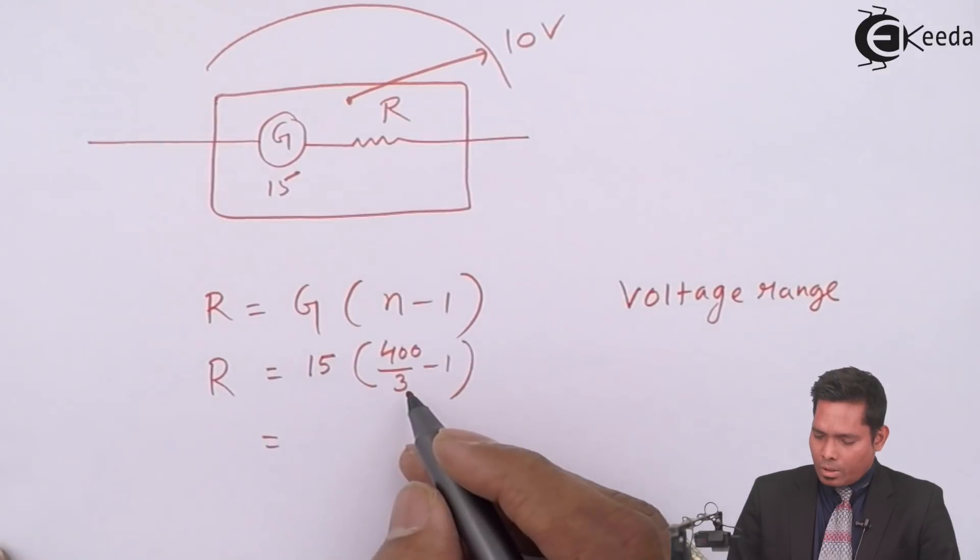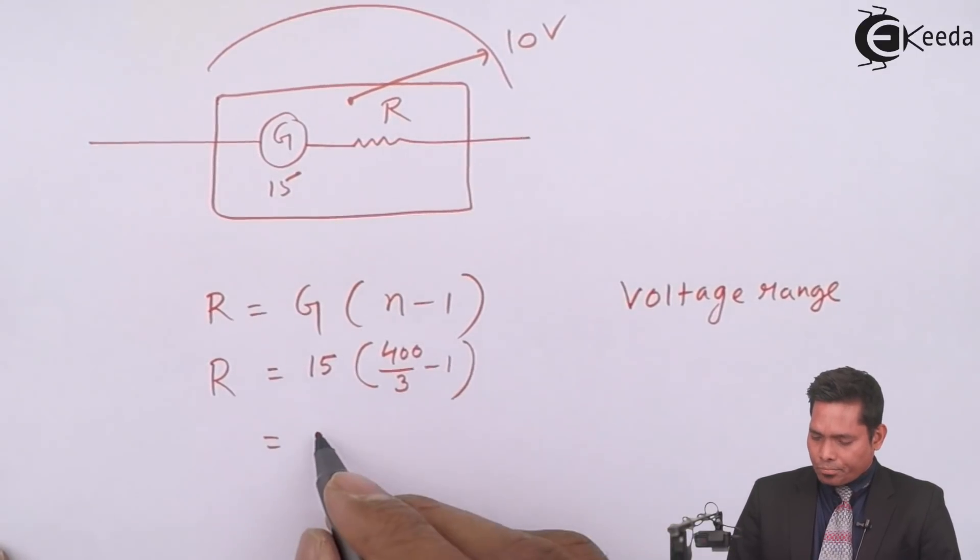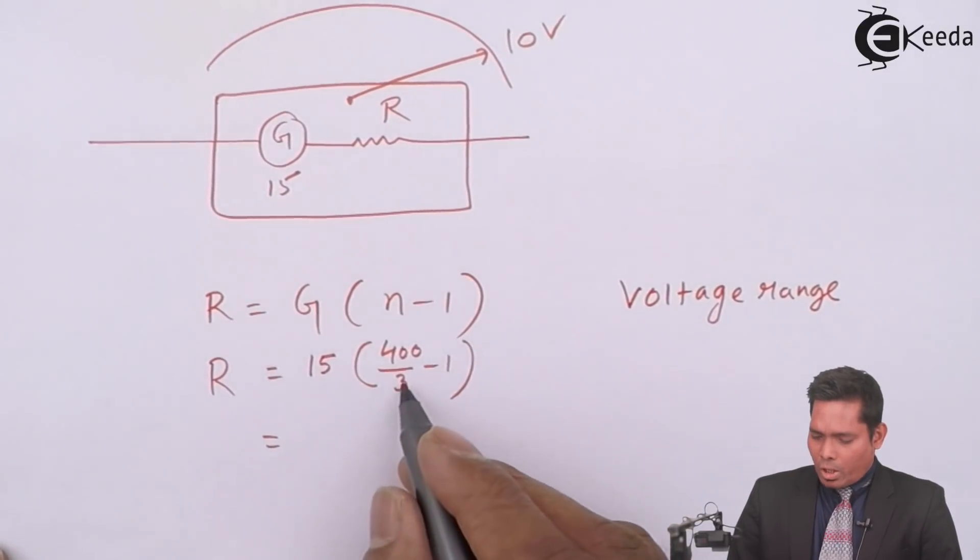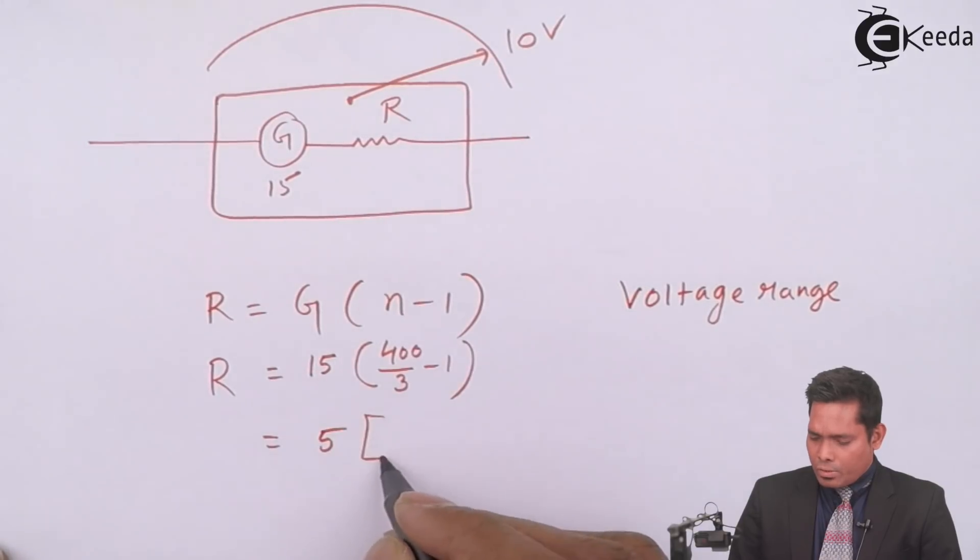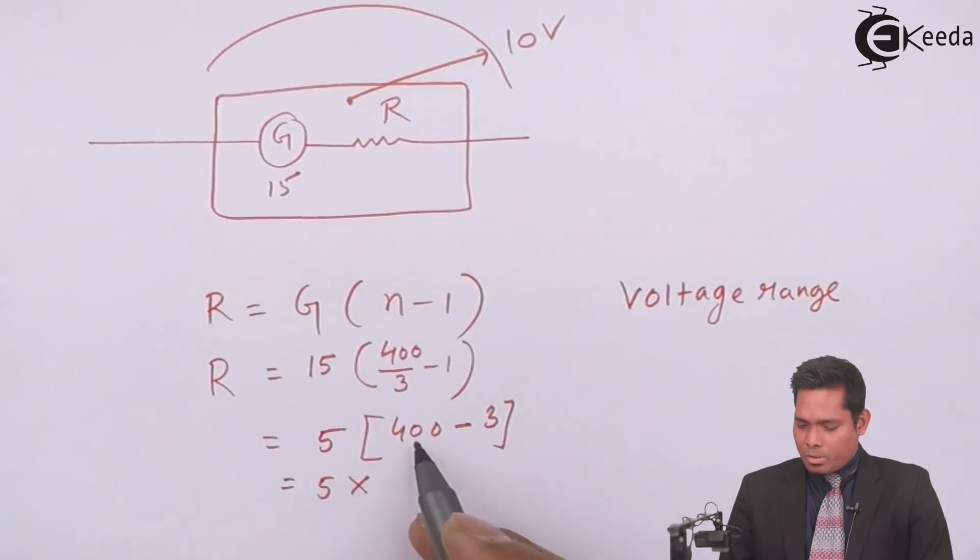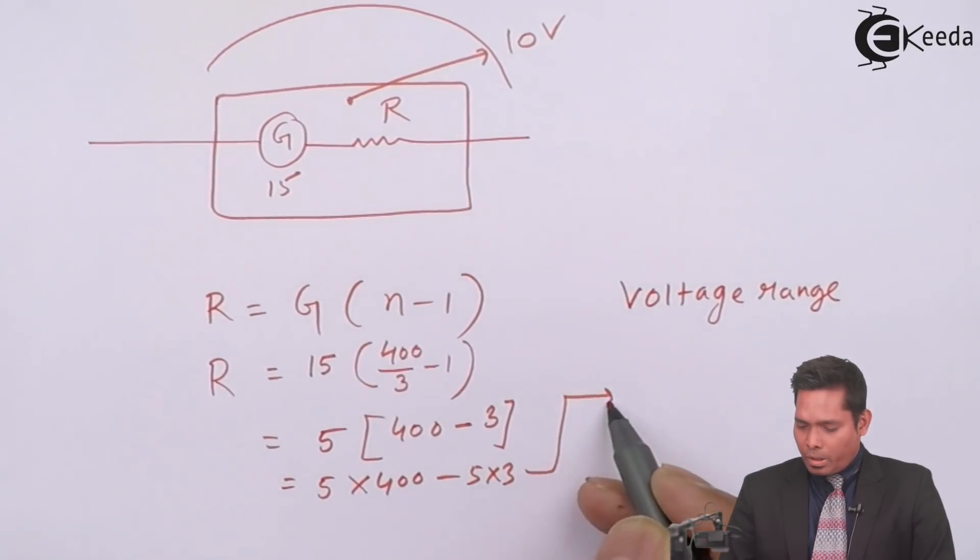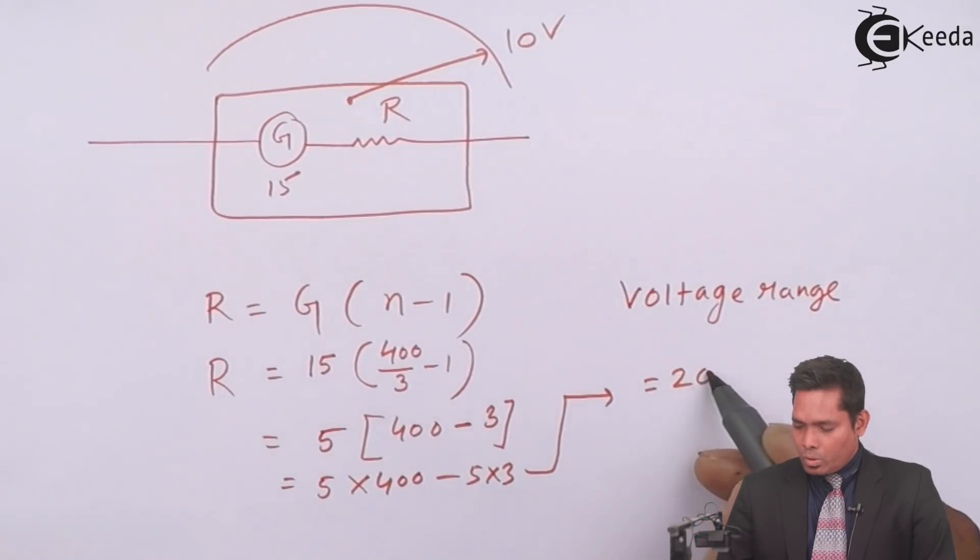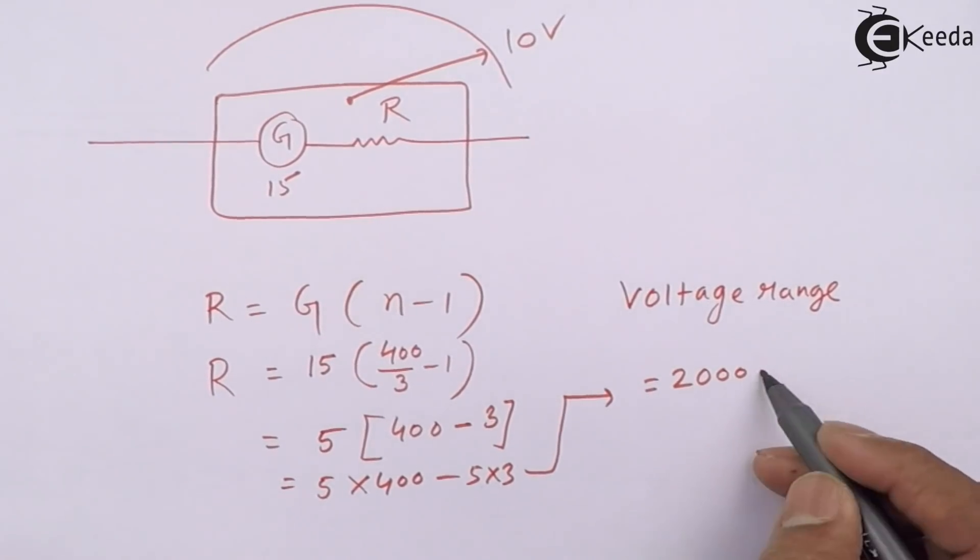If I use that, then I am getting this - the 3 comes out, this is 5, and this is 400 minus 3. So this is 5 times - you can write this is 5 times 400 minus 5 times 3, that comes out to be 2000 minus 15.